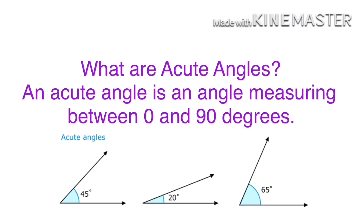20 degrees is also less than 90 degrees, so it is also an acute angle. 65 degrees is also less than 90 degrees and it is also an acute angle. So, an acute angle is an angle measuring between 0 and 90 degrees.